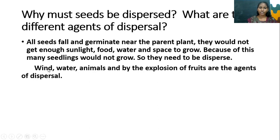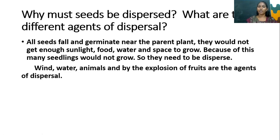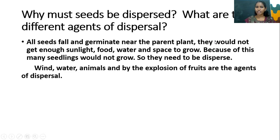Which are the agents of dispersal? Wind, water, animals, and the explosion of fruits are the agents of dispersal. So seeds must be dispersed so that they get enough sunlight, food, water, and space to grow.